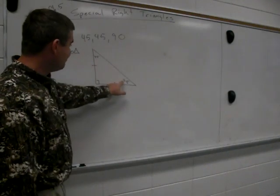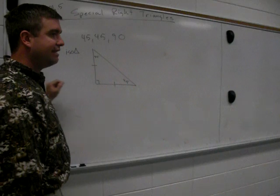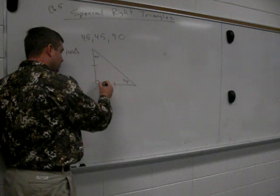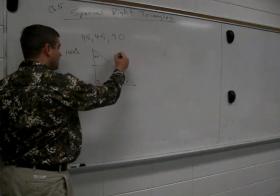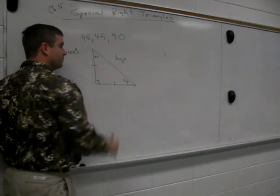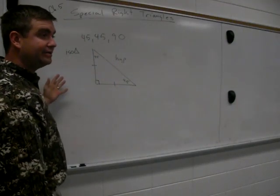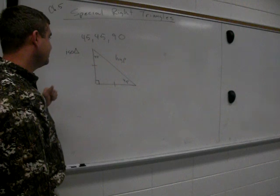The side opposite of the right angle is called the what? Hypotenuse. Very good. This is just some review, some geometry term review. When I say leg and I'm going to say hypotenuse, you need to know what I'm talking about.